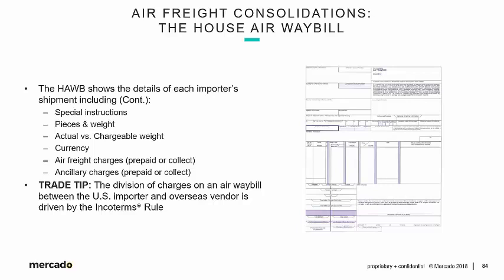As a trade tip, the division of charges on an airway bill between the U.S. importer and the overseas vendor is driven by the Incoterms rule. Who pays the inland freight from the origin factory to the airport? Who pays any consolidation fees by the freight forwarder? Who pays the main mode of air freight transport? Who pays for delivery at destination? The answer to that question depends on the Incoterms rule. We'll see how charges are divided when we take a closer look at a House Airway Bill.